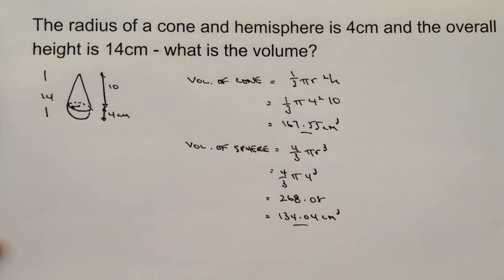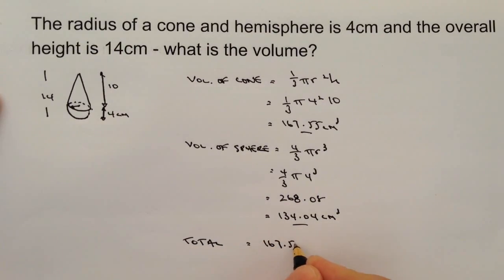So those are the two numbers that I need, one of which for the cone, one of which for the sphere. If I add those two together I'm going to get a total which is going to be 167.55 add that to 134.04 and that's going to give me a total of 301.59 centimeters cubed.